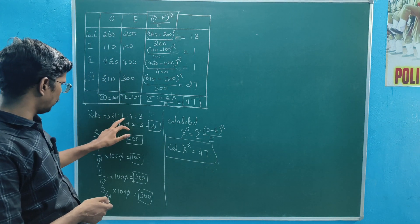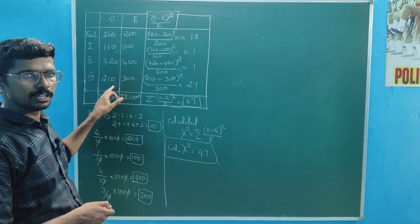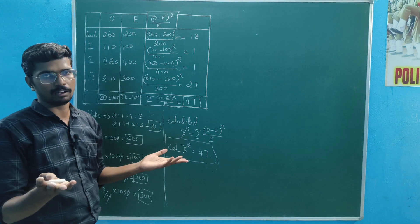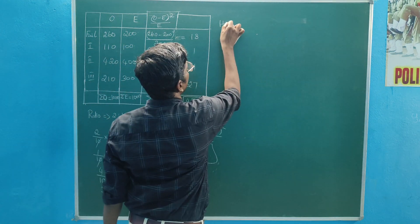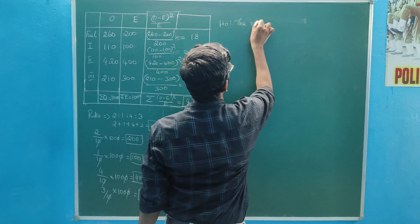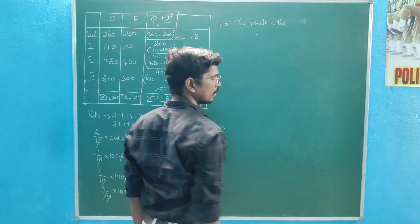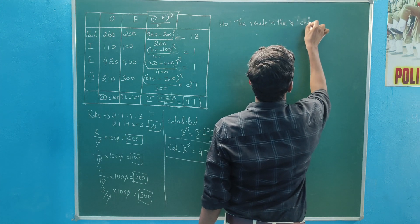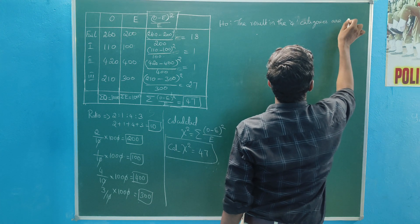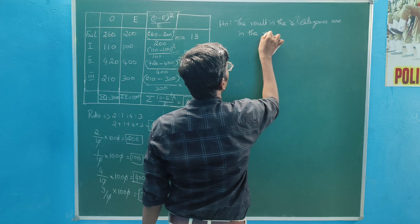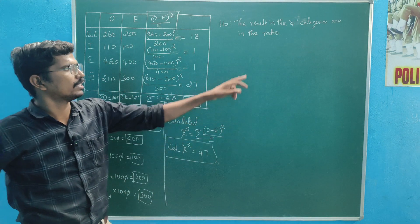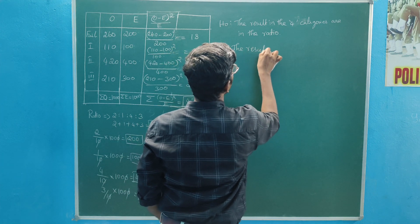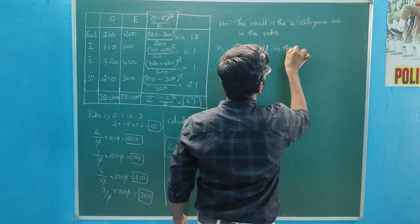The ratio of the marks — the number of students. The marks are not the test result. The result is that the four categories are in the ratio. H-naught: four categories number four. The result is that the sample has four categories.